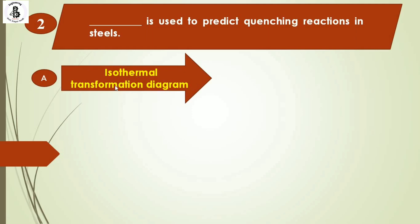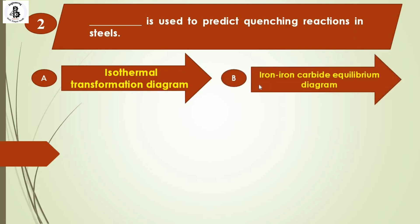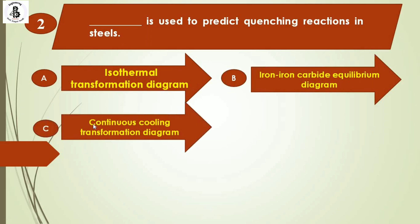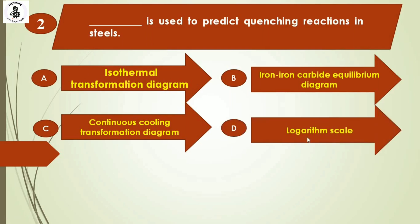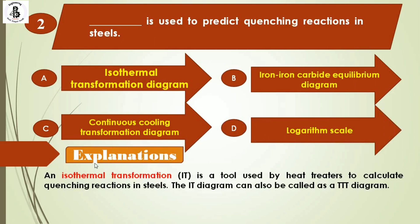Question 2: Which diagram is used to predict quenching reaction in steels? Option A: isothermal transformation diagram, Option B: iron-iron carbide equilibrium diagram, Option C: continuous cooling transformation diagram, Option D: logarithmic scale. The isothermal transformation diagram, also called the TTT diagram, is used to calculate quenching reactions in steels. The right answer is Option A.